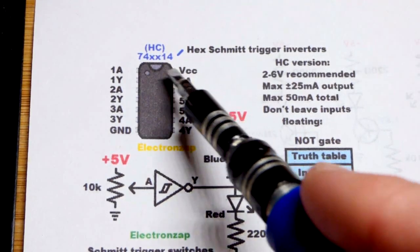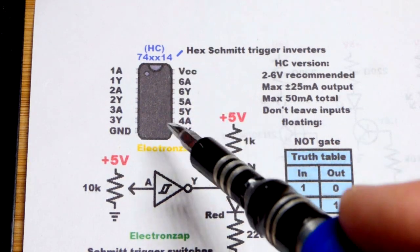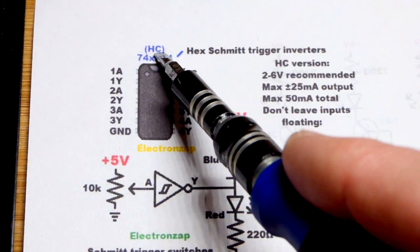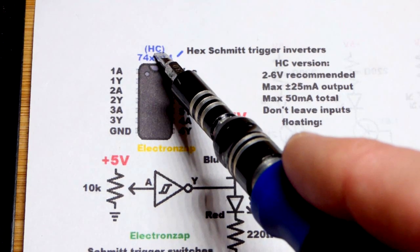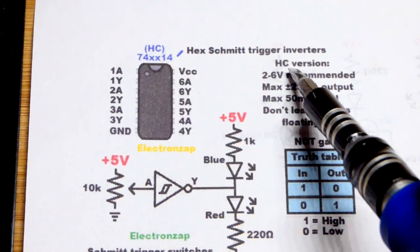So now in this video we're going to look at another 7400 series integrated circuit right here. This is the 7414. The specific one we're using is the 74HC14, the high speed CMOS version.